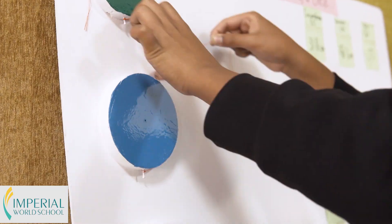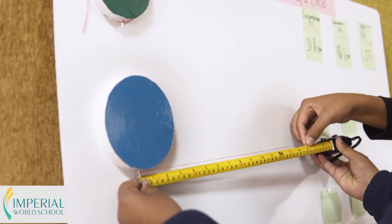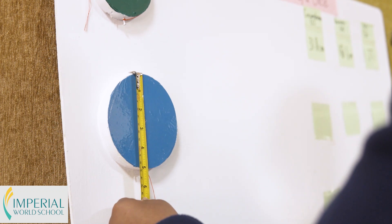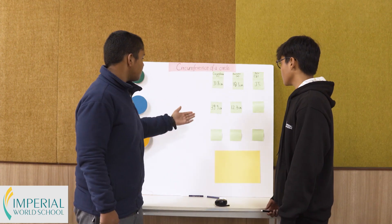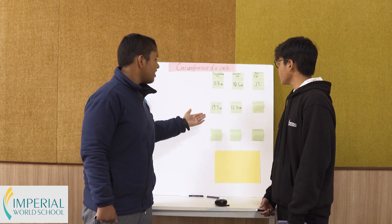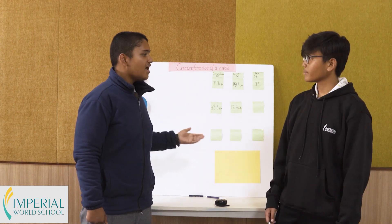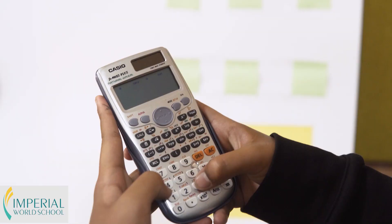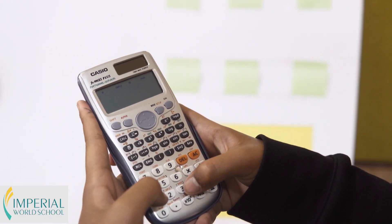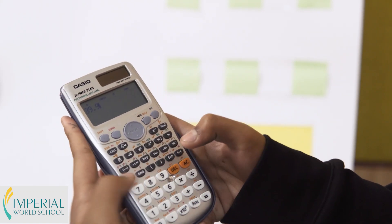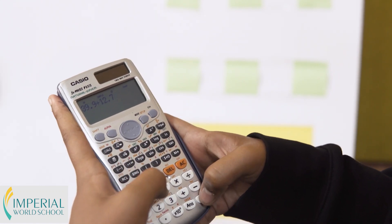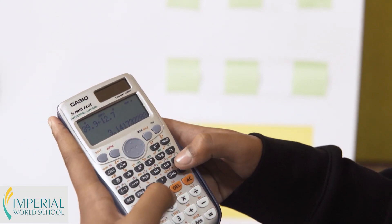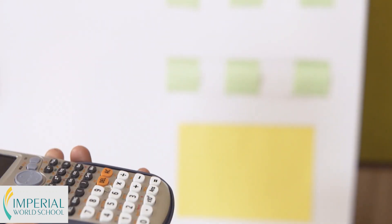Now we're going to measure the circumference and diameter of this blue circle. We found the circumference of this blue circle which is 39.9 centimeters and the diameter which is 12.7 centimeters. Rivas, will you calculate the ratio of these two? The circumference of the blue circle is 39.9 centimeters and diameter is 12.7 centimeters. If we divide these two, the ratio is again 3.14, which is approximately the value of pi.